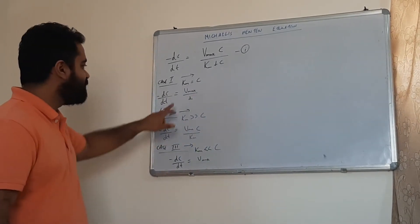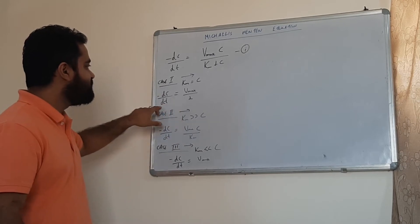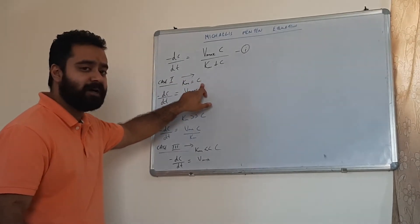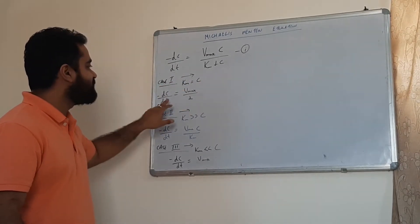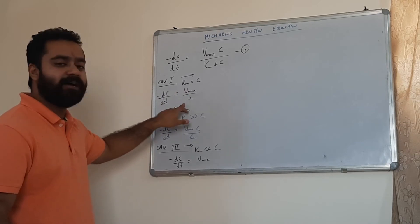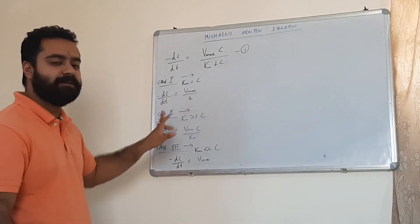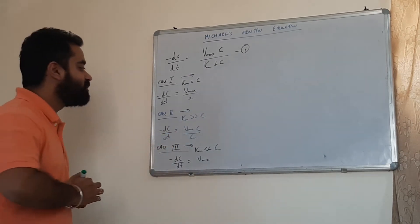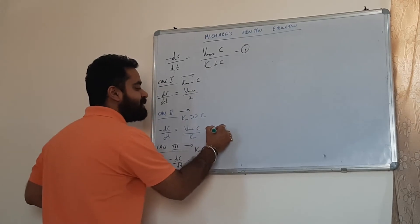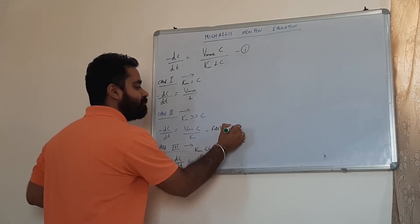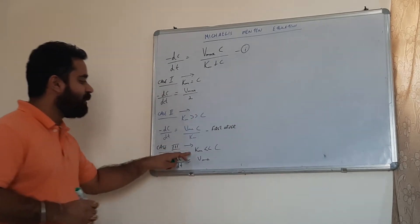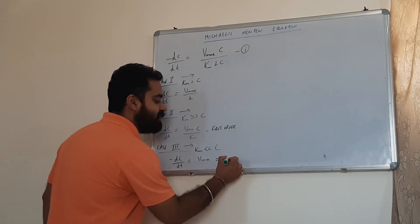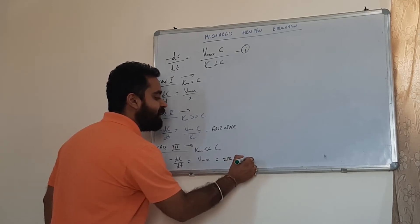So, in Case 1, minus dC/dt equals Vmax/2 — when Km equals the plasma concentration, the rate is half the maximum possible rate. In Case 2, when Km is much larger than c, the expression represents a first-order process. In Case 3, when Km is very small compared to c, the equation represents a zero-order or constant rate process.